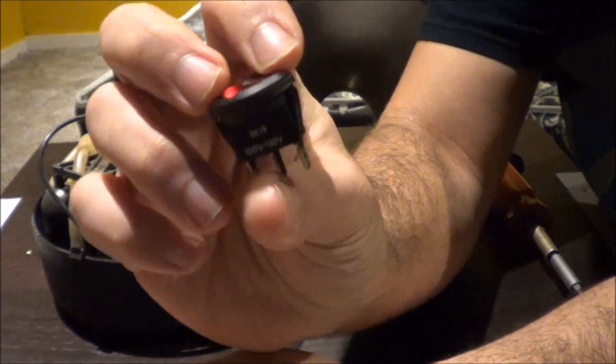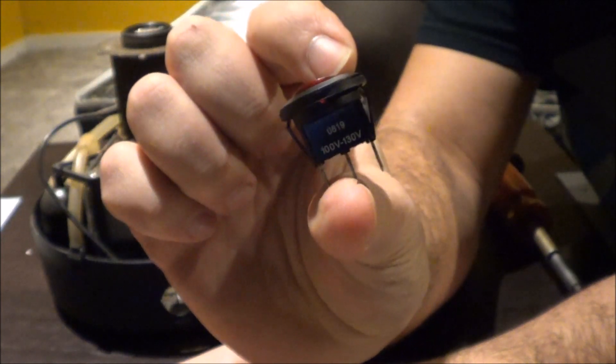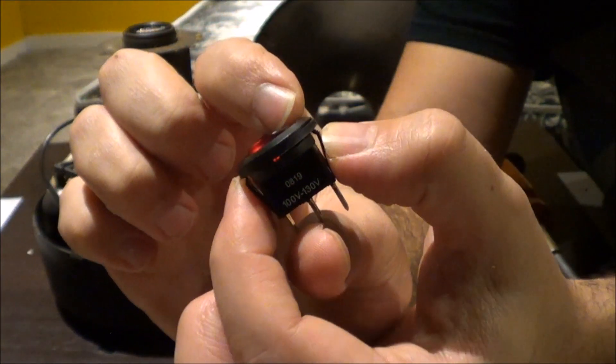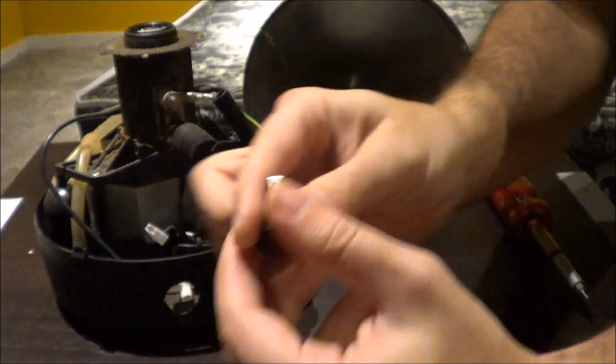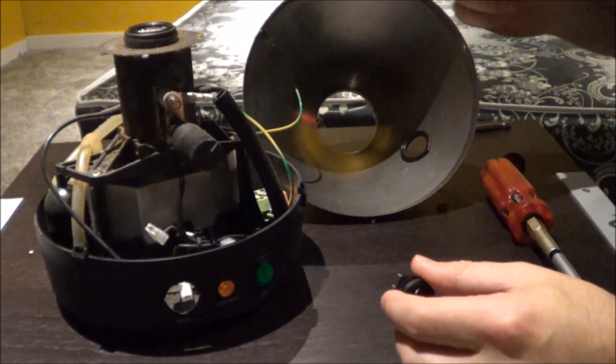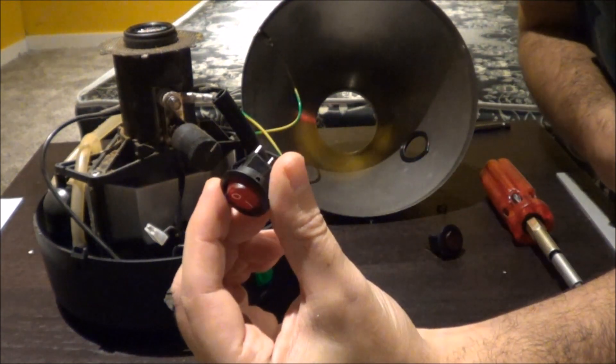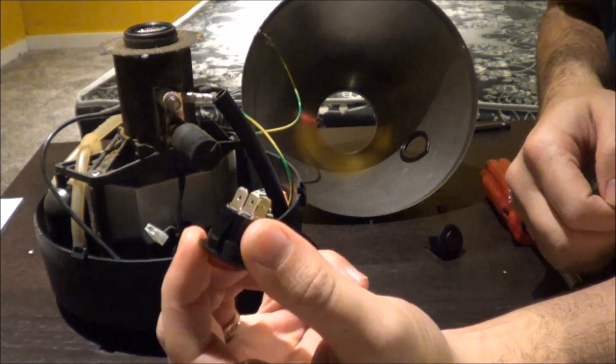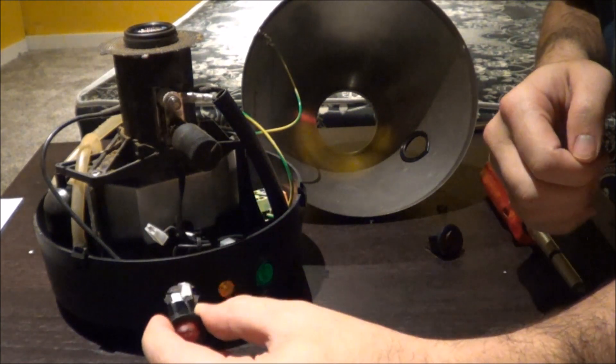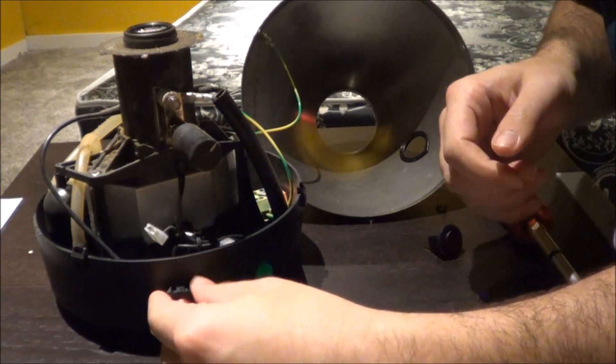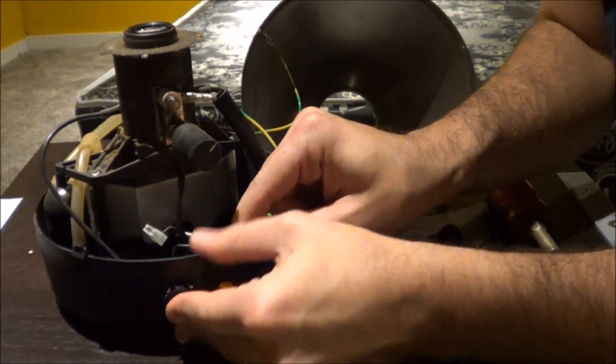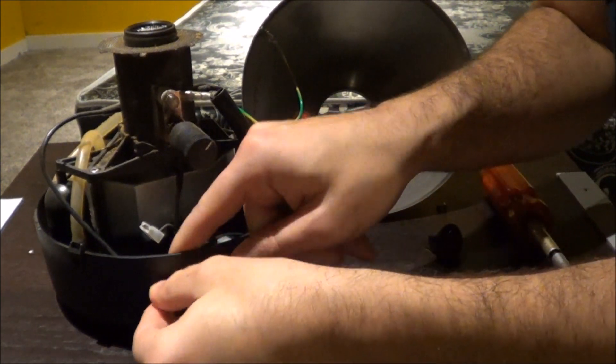The other thing about this rocker switch is that it's got these kind of black tabs on the sides. You're going to want to squeeze those as you kind of pull it out, and that's how it's going to pull out. So all you've got to do is you've got to take this switch, make sure that the number one is at the top, and then push it in, and then connect the connectors, and you're ultra good.